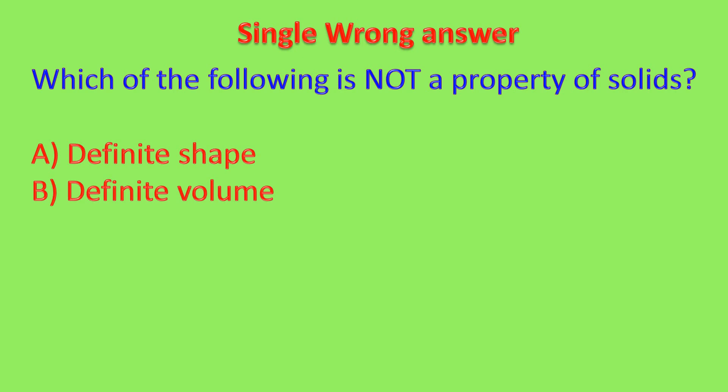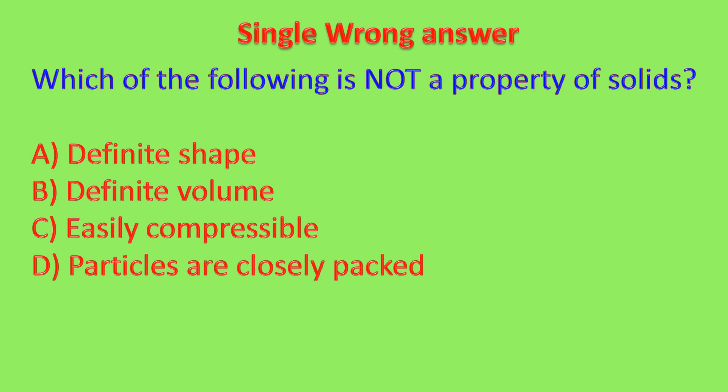Which is not a property of solid? The options are: definite shape, definite volume, easily compressible, and particles are closely packed. The question asks which is NOT a property of solids. Solids have definite shape, definite volume, and particles are closely packed. They are not easily compressible. So the wrong one — the correct answer — is easily compressible.